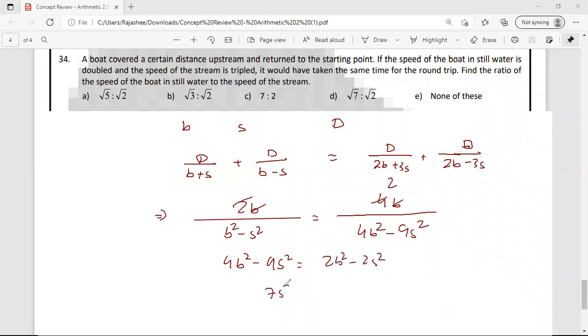That is 7S square is equal to 2B square. So B by S is equal to root 2 by—sorry, root 7 by root 2. Option D.